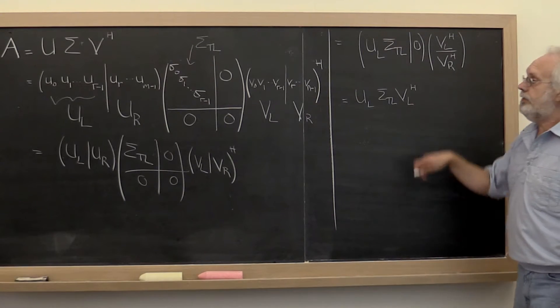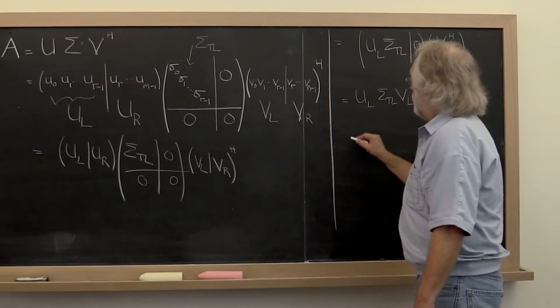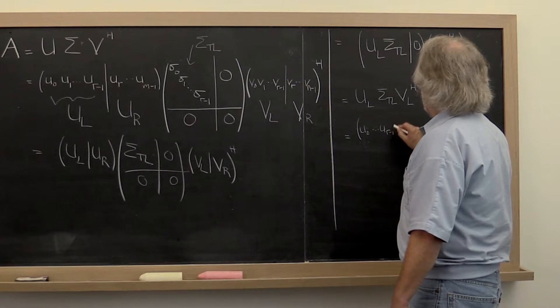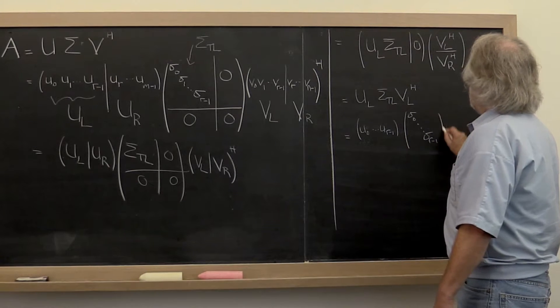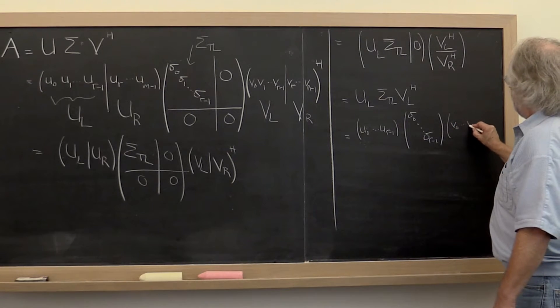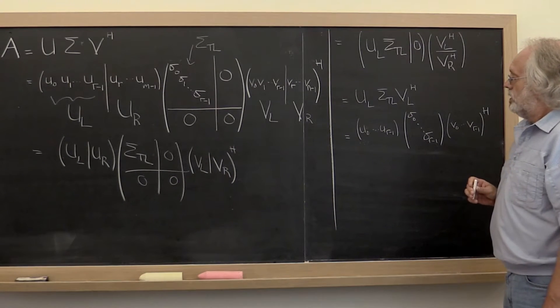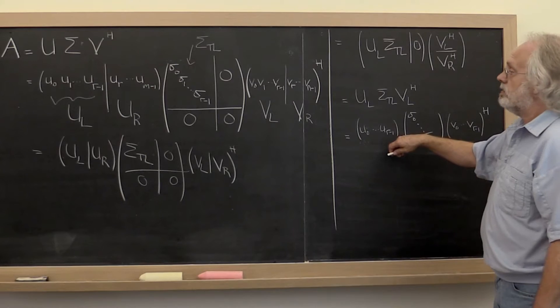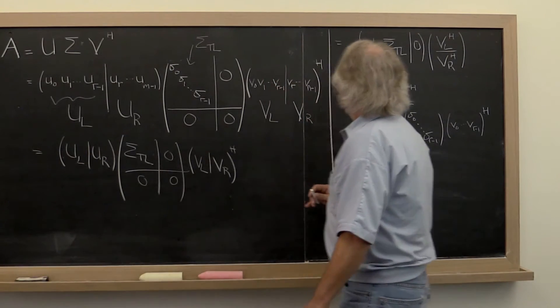Now if we go back to exposing the individual columns and the diagonal, then we get that this is u_0 through u_{r-1} times the diagonal matrix sigma_0 through sigma_{r-1} times the matrix partitioned by columns. One thing you notice is that it should take less to store this than it would to store the entire singular value decomposition.